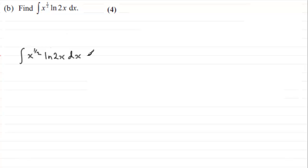So to do something like this, what I notice is that we have got two functions of x: we've got x to the power half multiplied by the natural log of 2x.